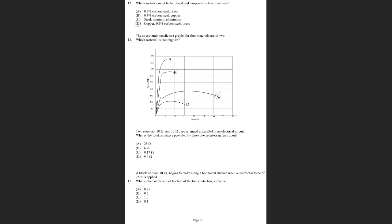Two resistors, 10 ohms and 15 ohms, are arranged in parallel electrical circuit. This is number 14. What's the total resistance? It's the reciprocal, so 1 over R equals 1 over 10 plus 1 over 15. And that equals 6 ohms. So B is the answer there.